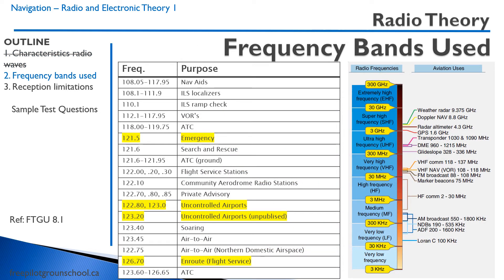Let's talk about the frequency bands used in aviation. You don't need to memorize these, but it's good to be somewhat familiar with them. Near the lower end, at 108 — just above civilian FM radio — from 108 to just below 118 you have your navigation aids: VORs and ILSs. Then air traffic control starts in the 118s, and the emergency frequency — hopefully you have this memorized — is 121.5. Search and rescue can also be reached on 121.6.